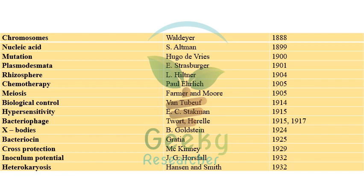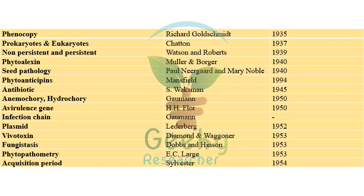'Bacteriophage' was independently discovered by Twort and d'Hérelle in 1915 and 1917. 'Export' by Goldstein in 1924. 'Bacteriophage' in gratia 1925. 'Cross protection' by McKinney in 1929. 'Inoculum potential' by JC Harshall in 1932. 'Heterokaryosis' by Hansen and Smith in 1932.